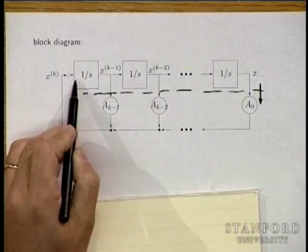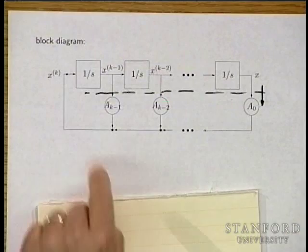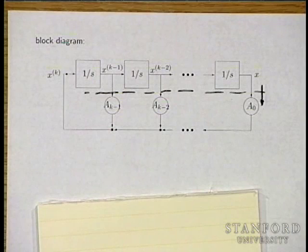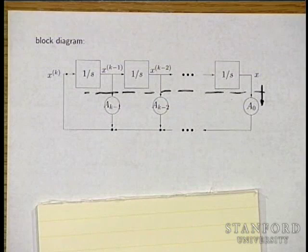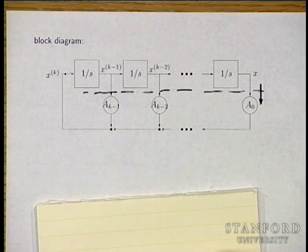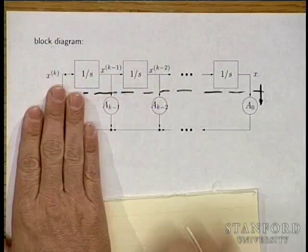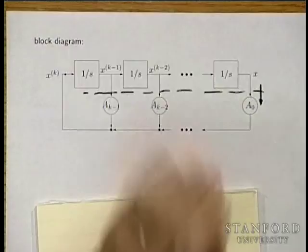Suppose you're near an equilibrium point but not exactly at it. Using a first-order Taylor expansion: f(x) ≈ f(xe) + (df/dx evaluated at xe) * (x - xe). Since f(xe) = 0, this gives delta-x-dot ≈ (df/dx at xe) * delta-x — exactly the autonomous linear dynamical system we've been studying. The Jacobian evaluated at the equilibrium is the matrix A.